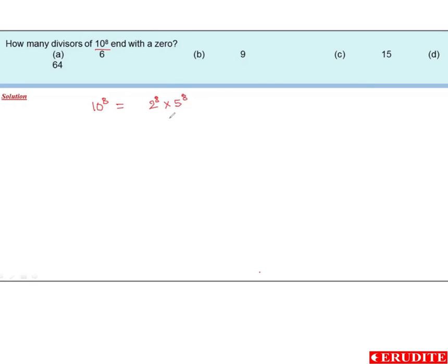Now, to have a 0 at the end, there must be at least one 2 and one 5. So we can write it like this: the remaining factors are 2 to the power of 7 into 5 to the power of 7. So the number of factors of 2^7 × 5^7...